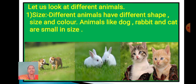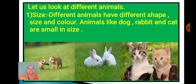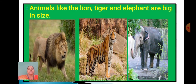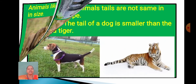Let us look at different animals on the basis of size. Different animals have different shape, size, and color. Animals like dog, rabbit, and cat are small in size. Animals like lion, tiger, and elephant are big in size.